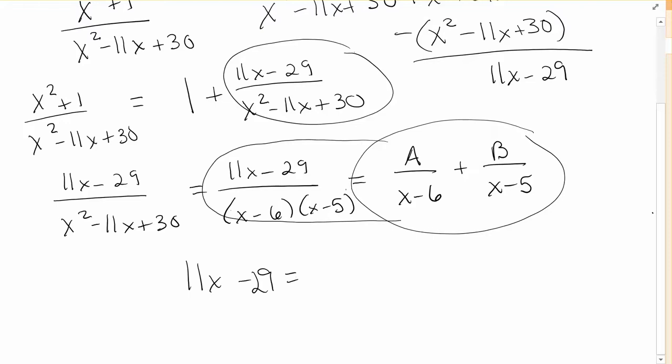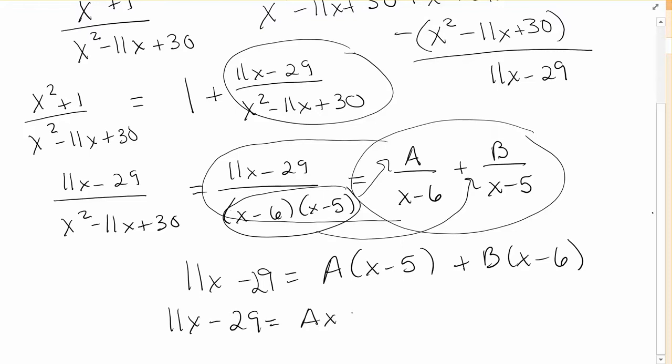the x minus 6's will cancel and you'll have a times x minus 5, and then on this term the x minus 5's will cancel and you'll just have b times x minus 6. So that's how it simplifies and we just now need to figure out what a and b are. So we have 11x minus 29 is equal to ax minus 5a plus bx minus 6b.